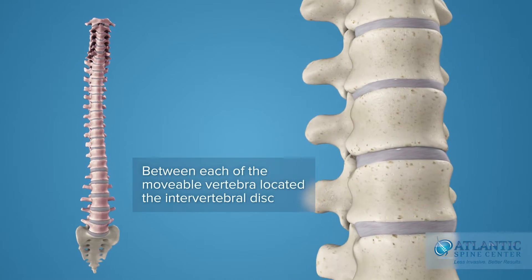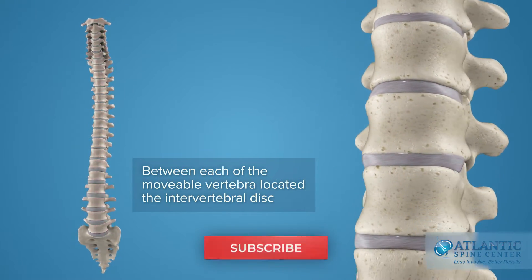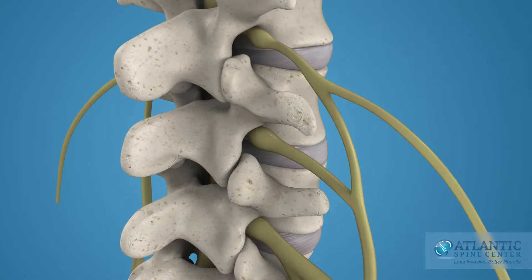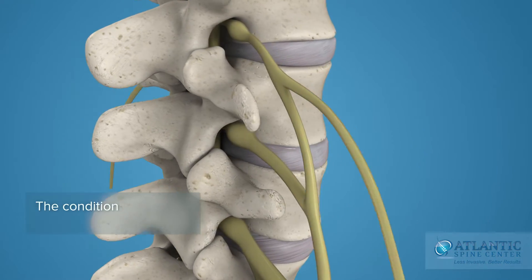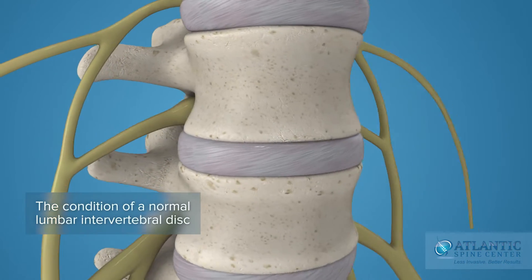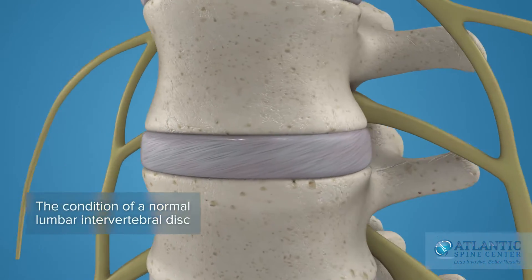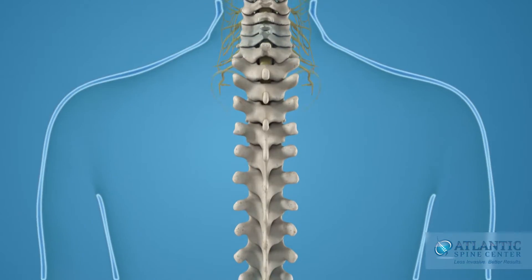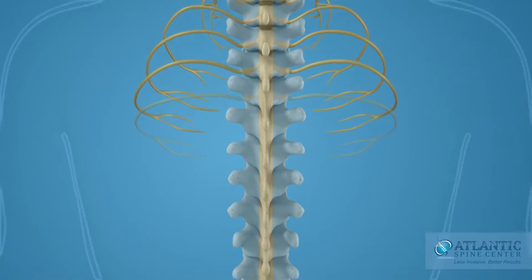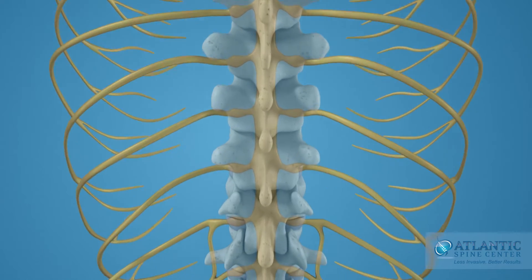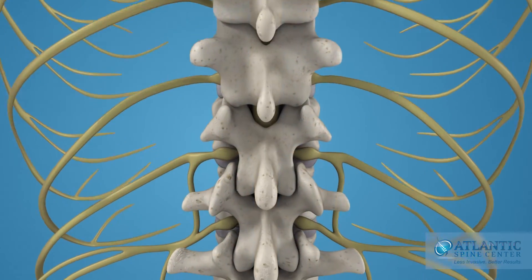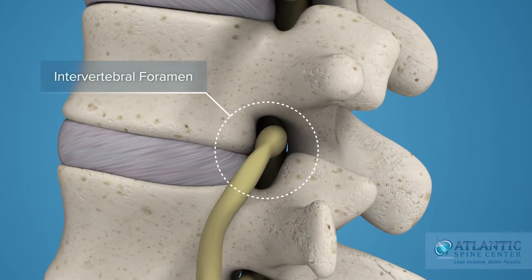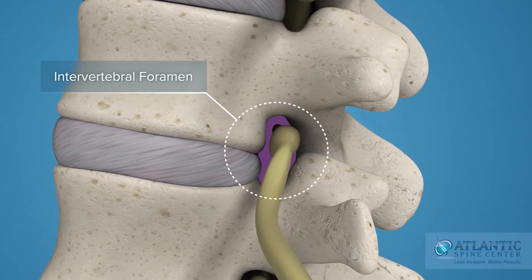Between each of the movable vertebrae is located the intervertebral disc. This is the condition of a normal lumbar intervertebral disc. The nerves in your spinal cord branch off to form pairs of nerve roots that travel through the small openings between your vertebrae, called intervertebral foramens.